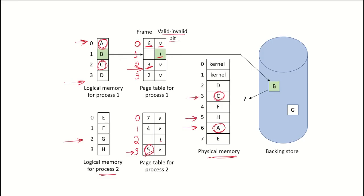Logical page 3 of process 2 is available in frame 5. Now, if the processor has requested logical page 1, the page table for process 1 will be checked and it is seen that page 1 is currently invalid — meaning this page is not currently in main memory. This is a page fault. The page is currently on the hard disk or backing store, and it must be brought into physical memory, but as we can see, all frames are currently occupied.